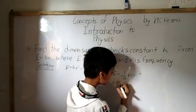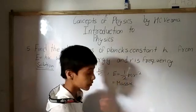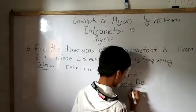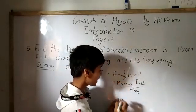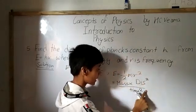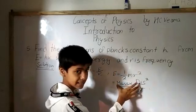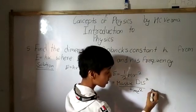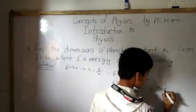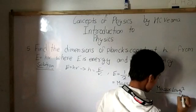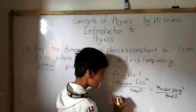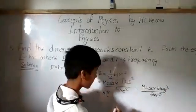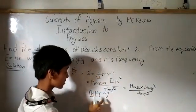We rewrite energy as mass multiplied by velocity squared. Since velocity equals displacement by time, velocity squared equals displacement squared by time squared. Displacement squared can also be written as length squared. So energy equals mass times length squared divided by time squared. Writing this in standard form: M L squared T to the power minus 2. This is the dimensional formula for energy E.